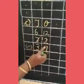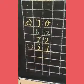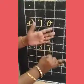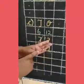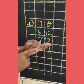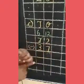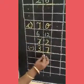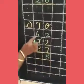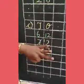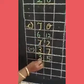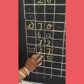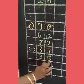Now 12 minus 7. 12 in the mind, 7 in the finger. Before 12: 11, 10, 9, 8, 7, 6, 5. Then 6 in the mind, 3 in the finger. Before 6: 5, 4, 3. So 72 minus 37 is equal to 35. Next sum.